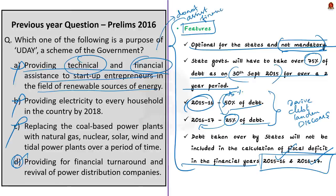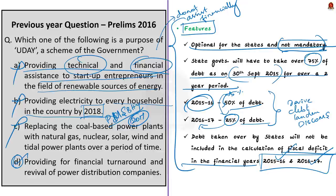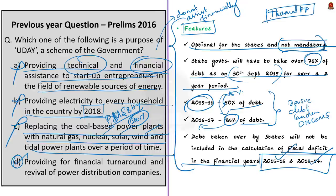Option B says the purpose of UDAY scheme is to provide electricity to every household in the country by 2018. This is wrong — this option is actually about the Saubhagya scheme, or the Pradhan Mantri Sahaj Bijli Har Ghar Yojana, launched in 2017 with an objective to provide electricity to all households by December 2018. Option C says the purpose of UDAY is to replace coal-based power plants with natural gas, nuclear, solar, wind and tidal power plants — also absolutely wrong, as India relies heavily on coal-based power plants and replacing them via a single scheme is not viable.